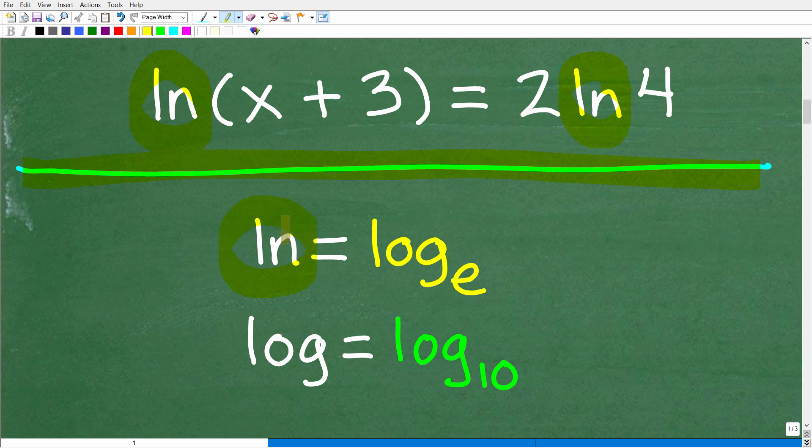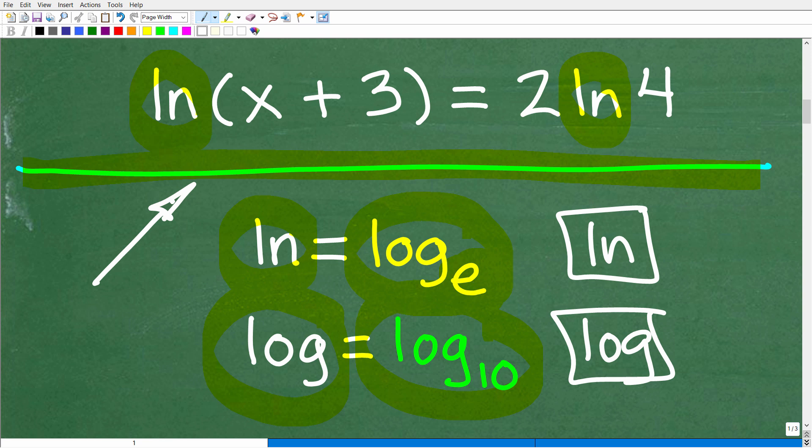But ln is something called the natural logarithm or log base e, where e is the natural number or base e. Now this is in contrast to log, which is the common logarithm or log base 10. Now on our calculators, we have an ln function or button and a log button. And we use these functions to solve logarithmic equations. But anytime you are dealing with anything with base e, you're going to be thinking about ln.